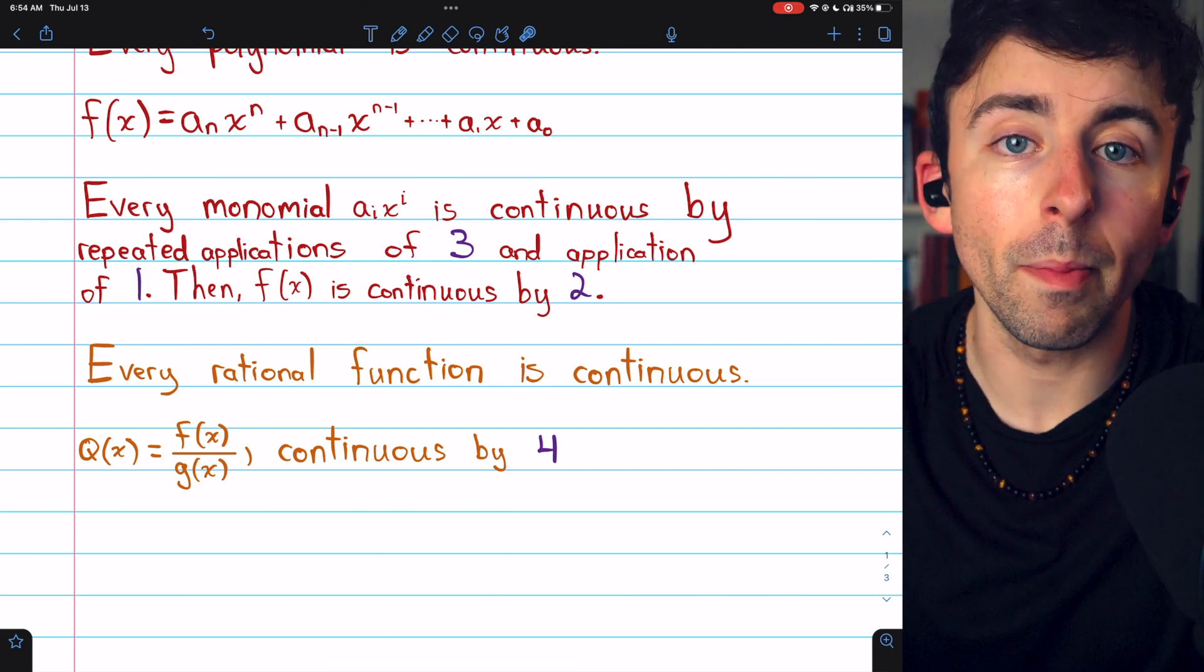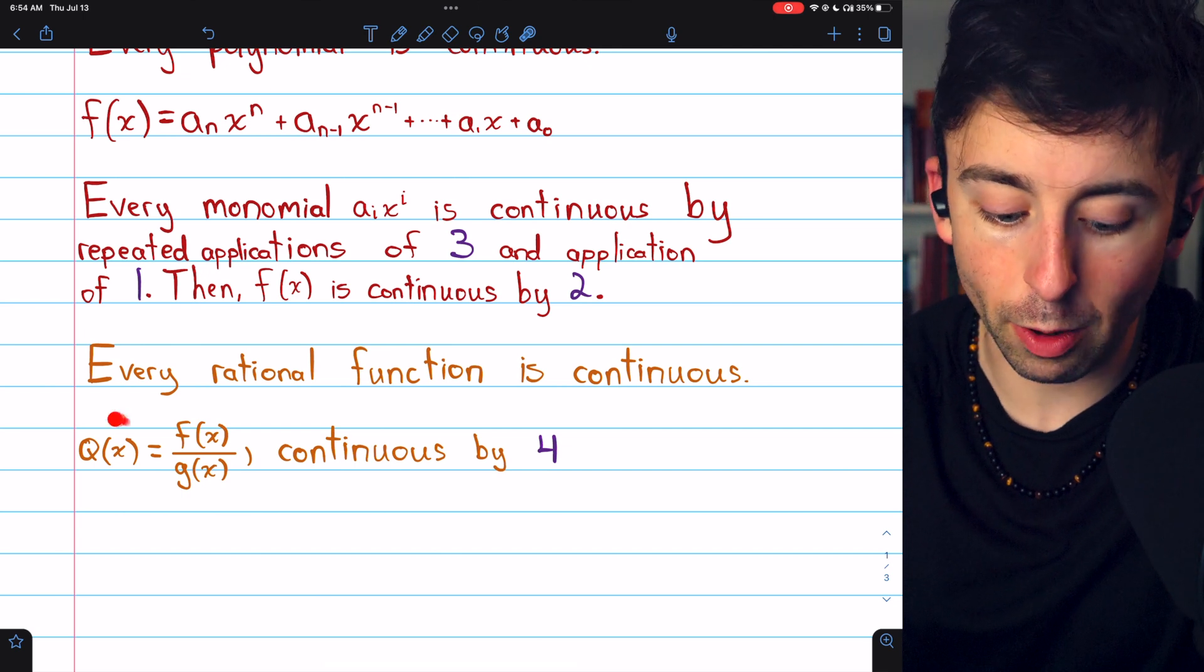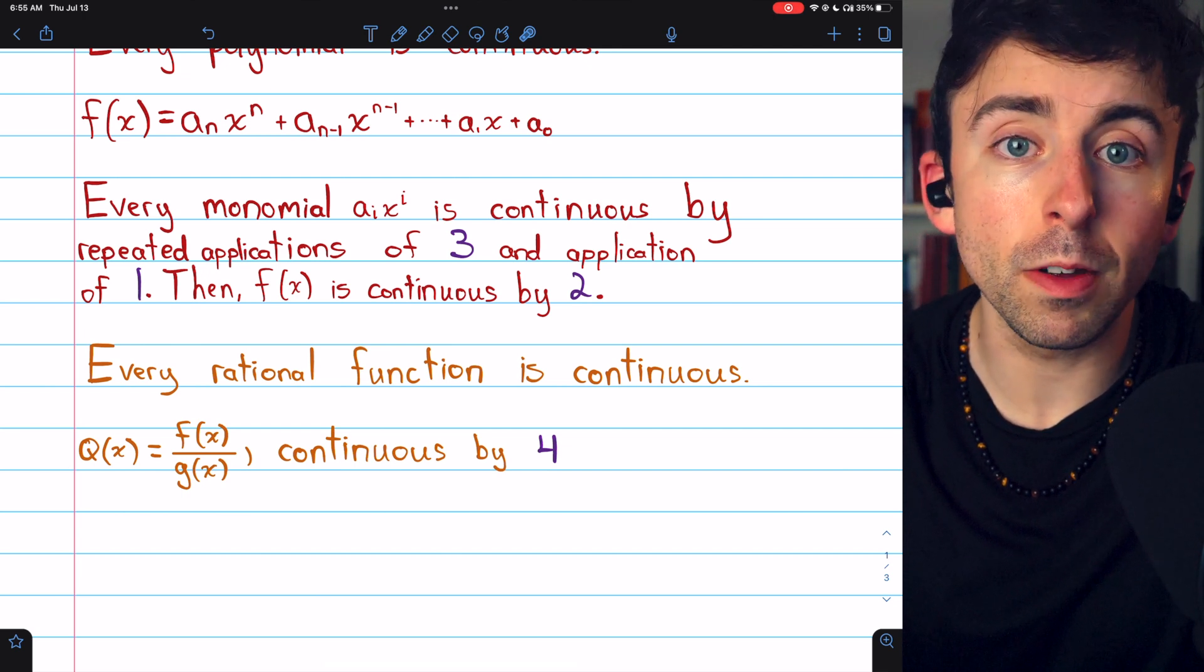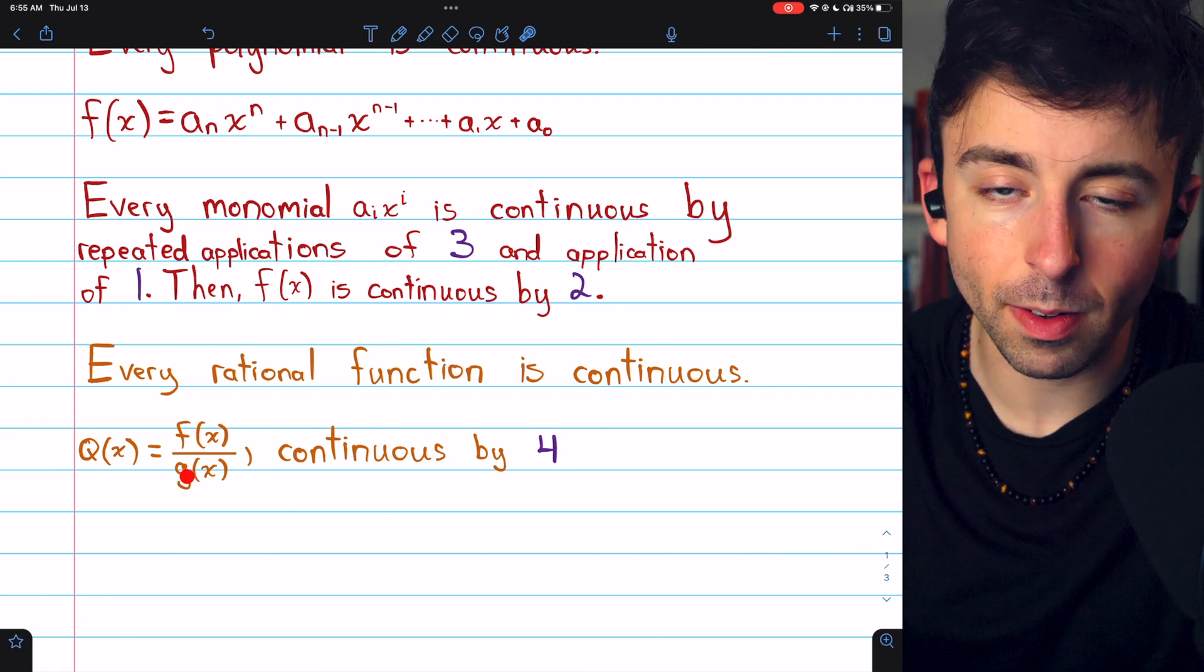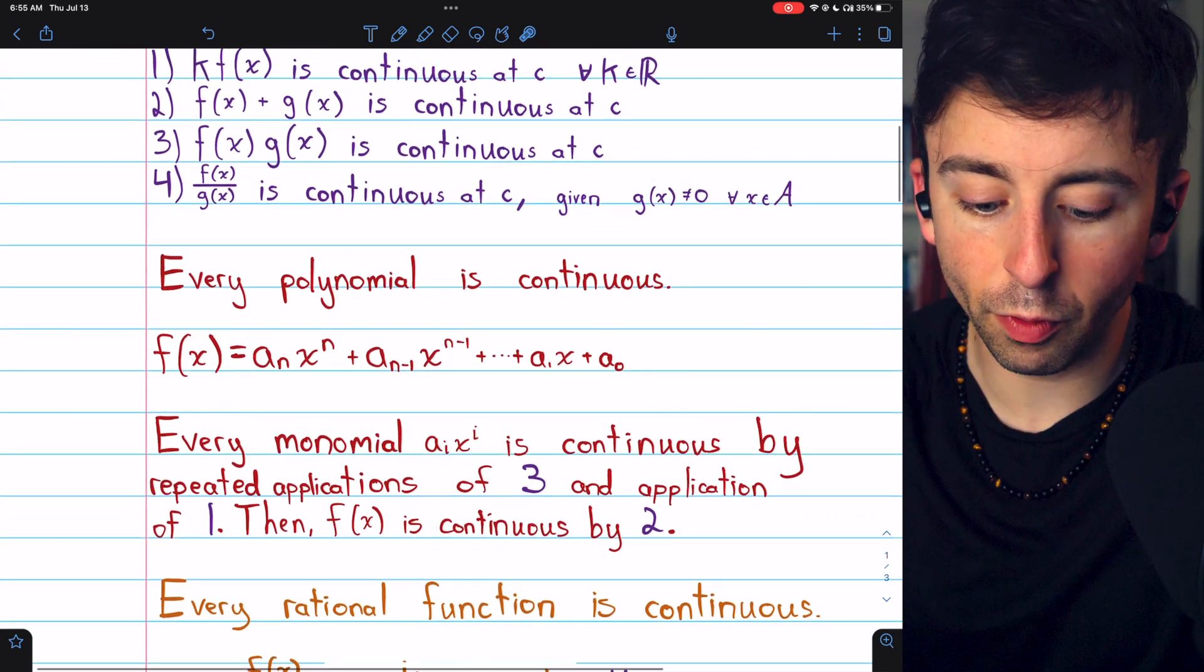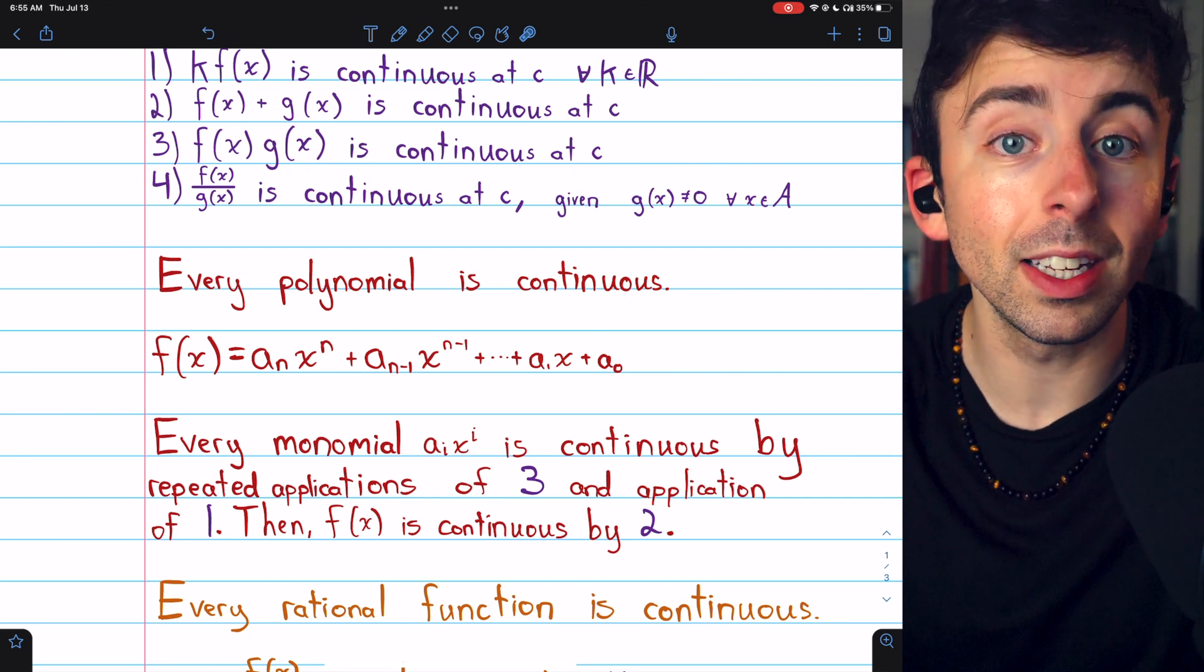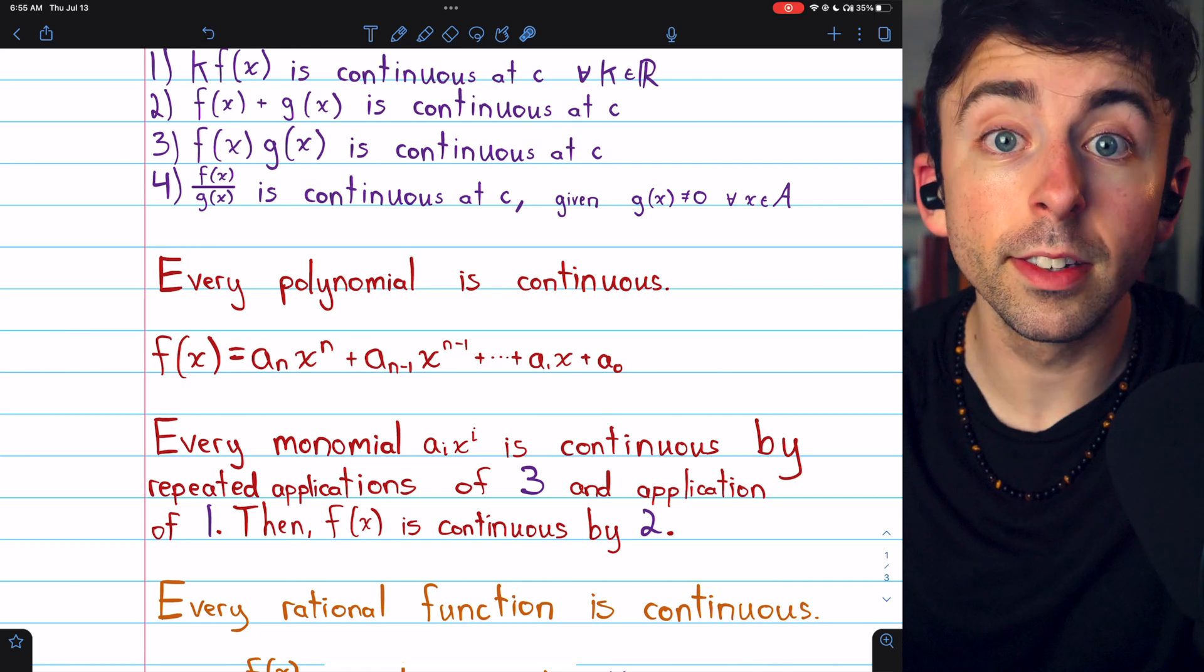And of course, the domain doesn't include where g of x equals zero. We know that a rational function has to be continuous because we just saw that every polynomial is continuous. So f and g would be continuous. But then we also have continuity law four, which tells us the ratio of continuous functions is also continuous, assuming that the denominator is non-zero. So indeed, every rational function is continuous, at least where it's defined.